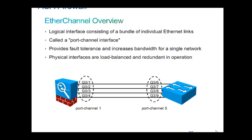Even though you have redundant links, there is no loop because we don't have separate redundant links — we have bundled them into one single logical link. That's why port channel is important. EtherChannel hashes the traffic and sends it across all four links, providing load balancing. The hash is done before sending through the logical link because it is multiple links through which the load has to be sent.